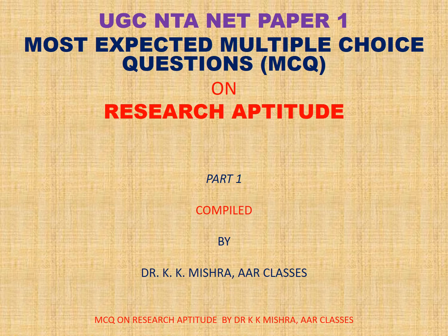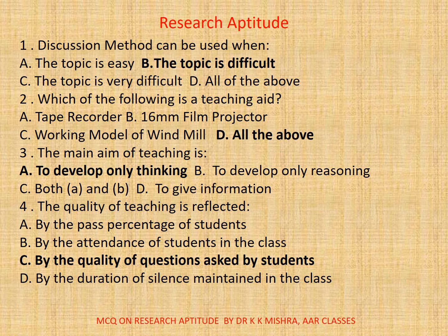Question 1: Discussion method can be used when — A) the topic is easy, B) the topic is difficult, C) the topic is very difficult, or D) all of the above. The correct option is B — the topic is difficult. Question 2: Which of the following is a teaching aid? A) tape recorder, B) 16mm film projector, C) working model of windmill, D) all of the above.